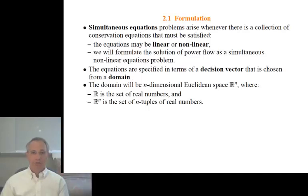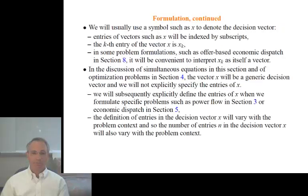To specify our system of equations, we need to think about a decision vector. It's chosen from a domain. The domain, in our case, will be n-dimensional Euclidean space. I'll denote that by R to the n. R means the set of real numbers. R to the n is the set of n-tuples of real numbers, the set of n-vectors where each entry of the vector is a real number. I'm usually going to use a symbol such as x to denote the decision vector, with entries in x denoted by subscripts. So, xk will be the kth entry of x.